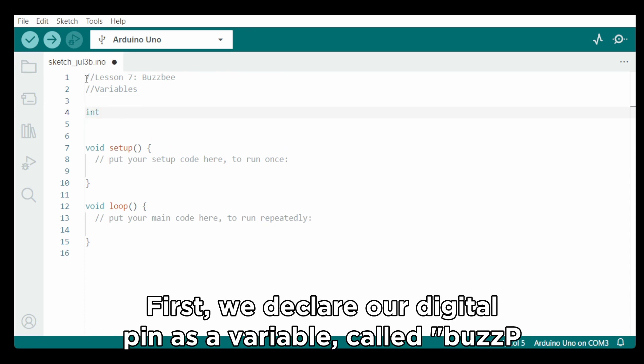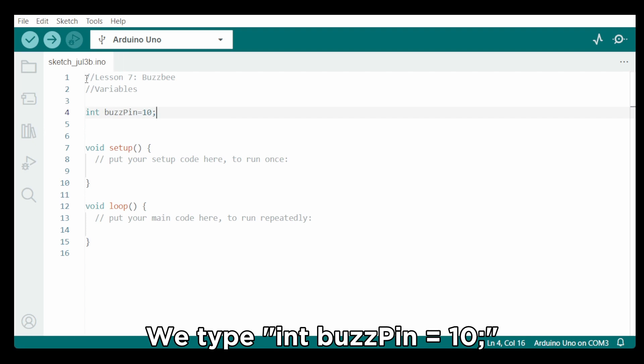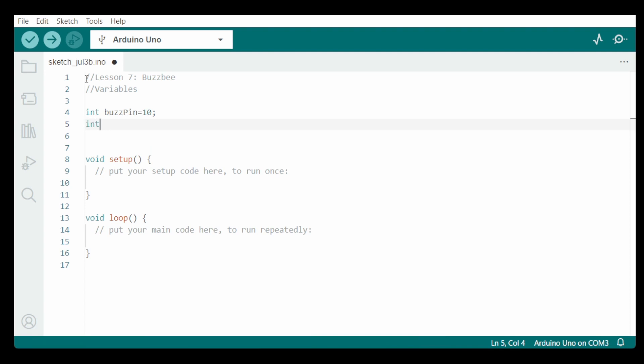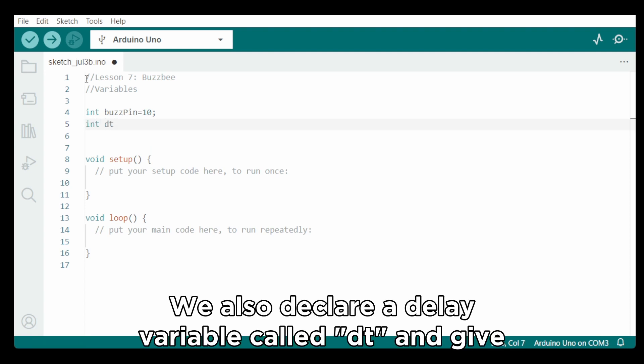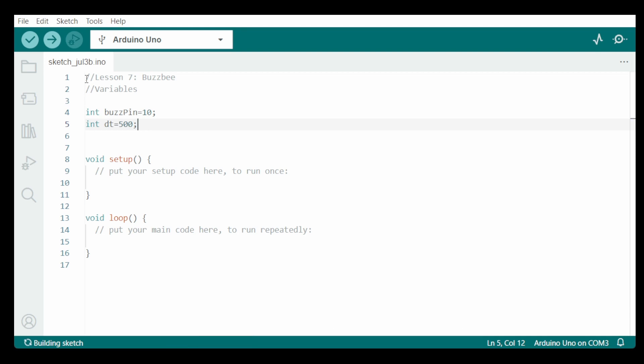First, we declare our digital pin as a variable called buzzpin. Because we put our red cable in pin number 10, we type int buspin equals 10. We also declare a delay variable called dt and give it a value of 500 milliseconds. int dt equals 500.